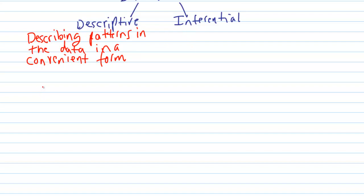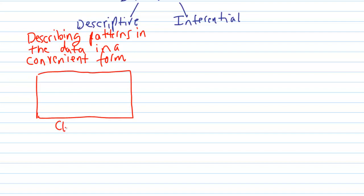An example would be looking at the number of males and females in a classroom. Let's say in a classroom I have 15 males and 30 females.